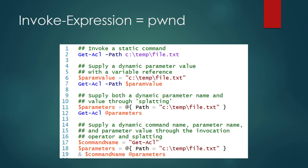In general, Invoke-Expression means you are owned. Instead of using Invoke-Expression, PowerShell has a technique called splatting, where you can say my parameter name is 'path' and the value of the path is this. You can use this technique with the ampersand operator — command name and parameters. In most cases, this pattern should work.